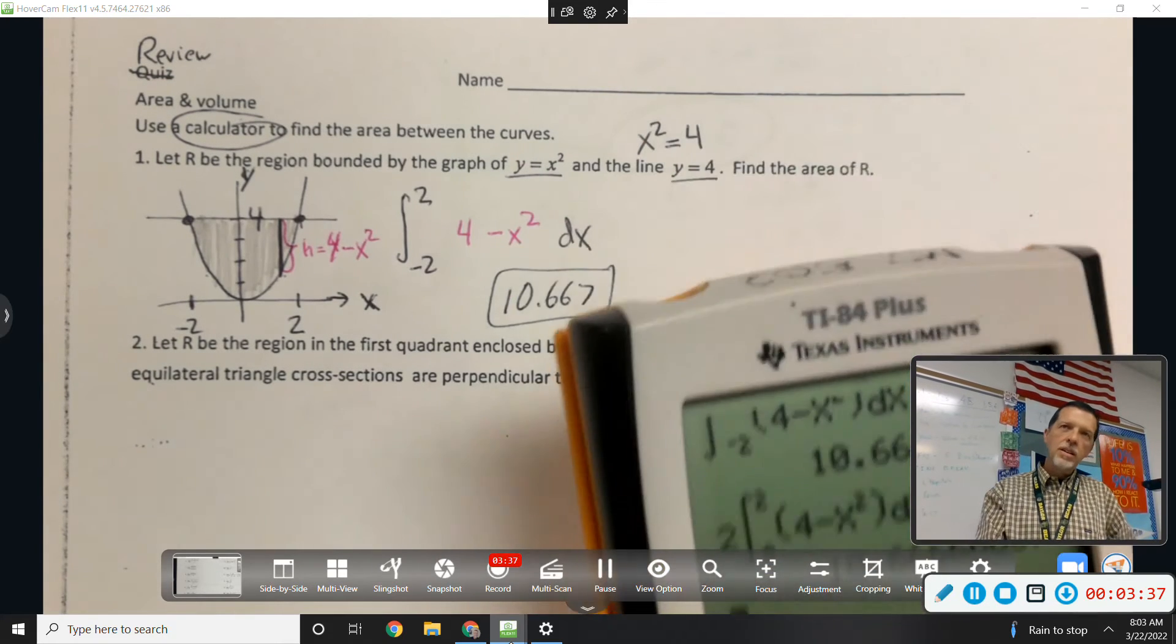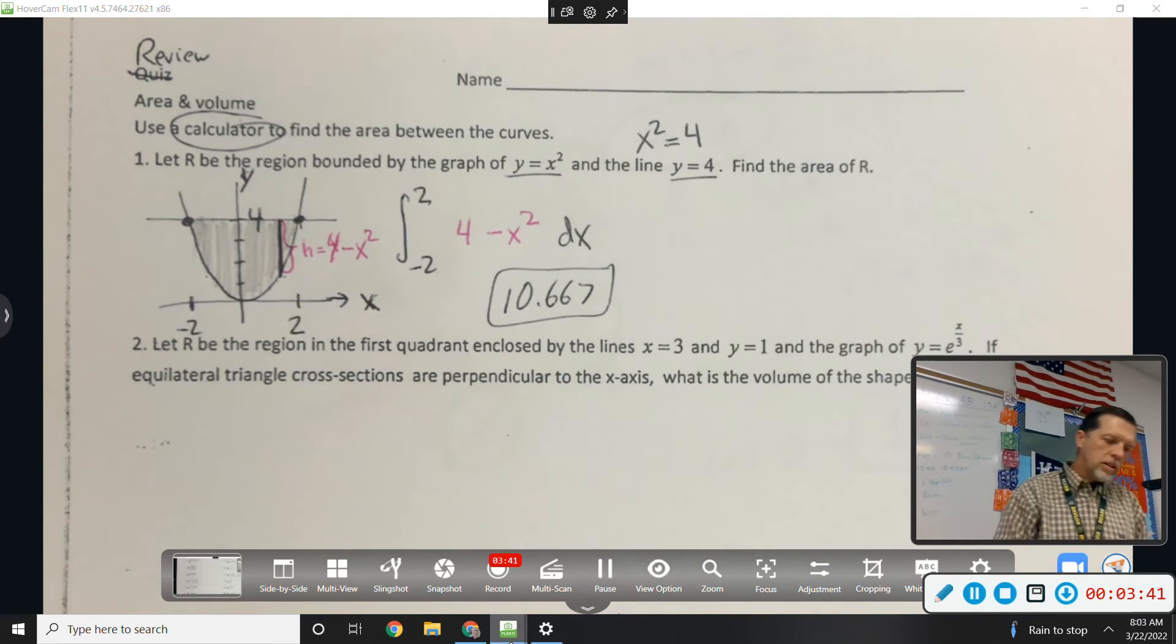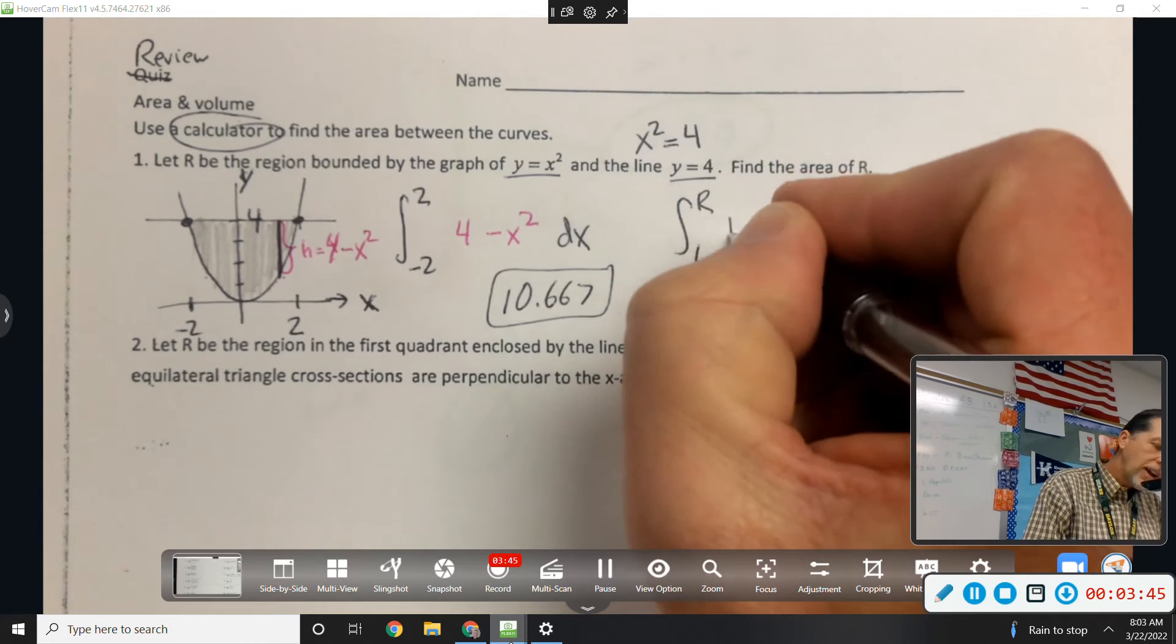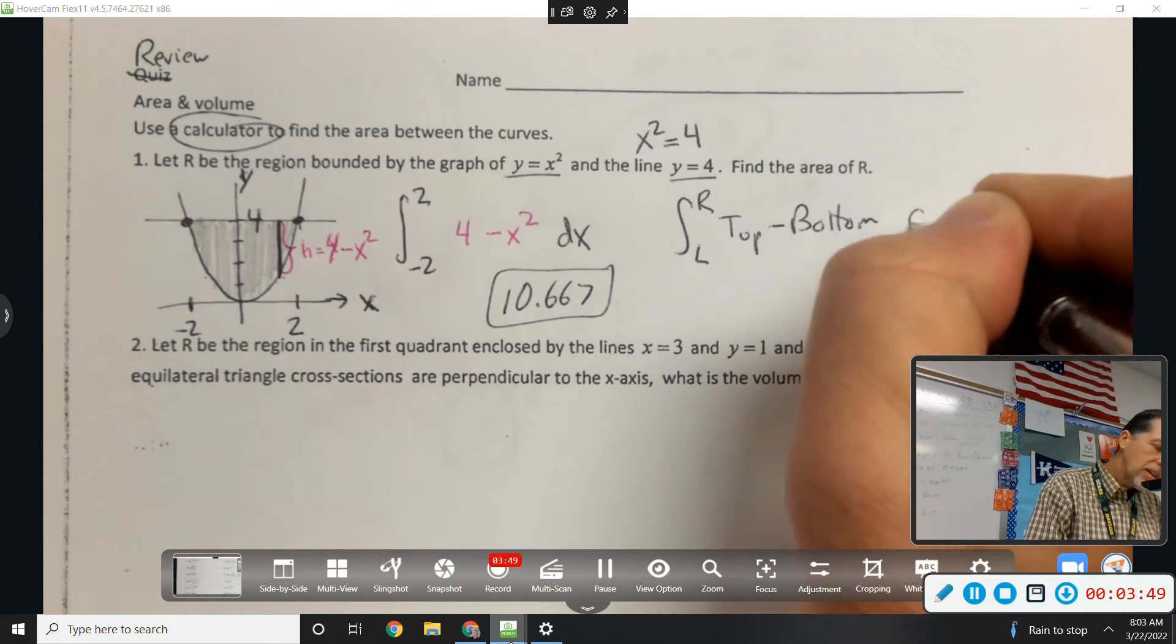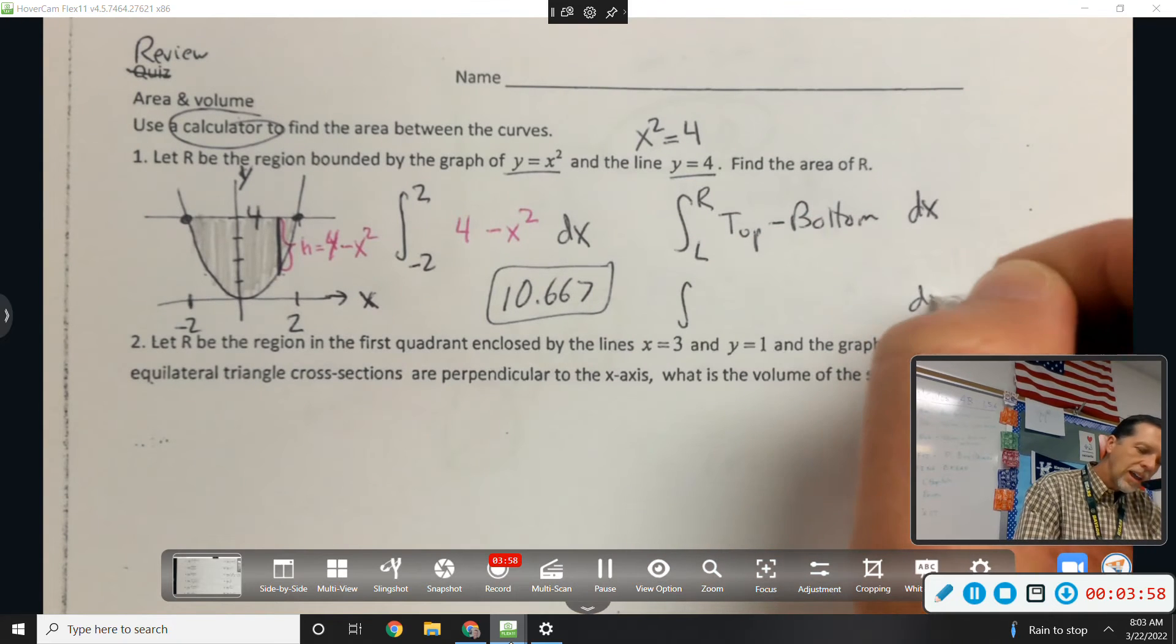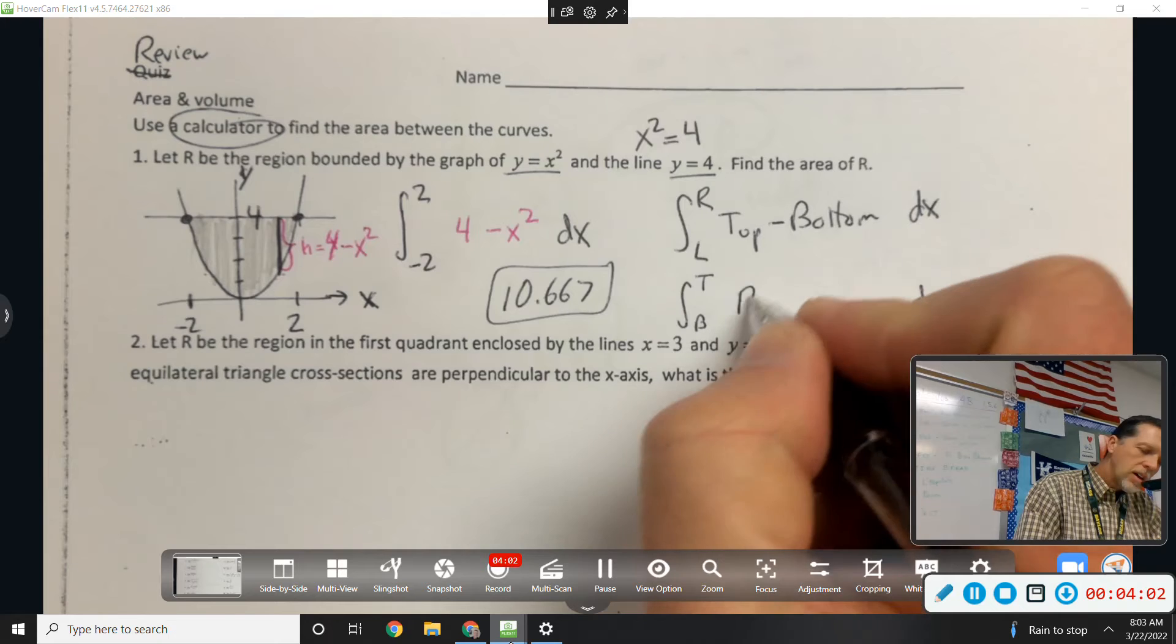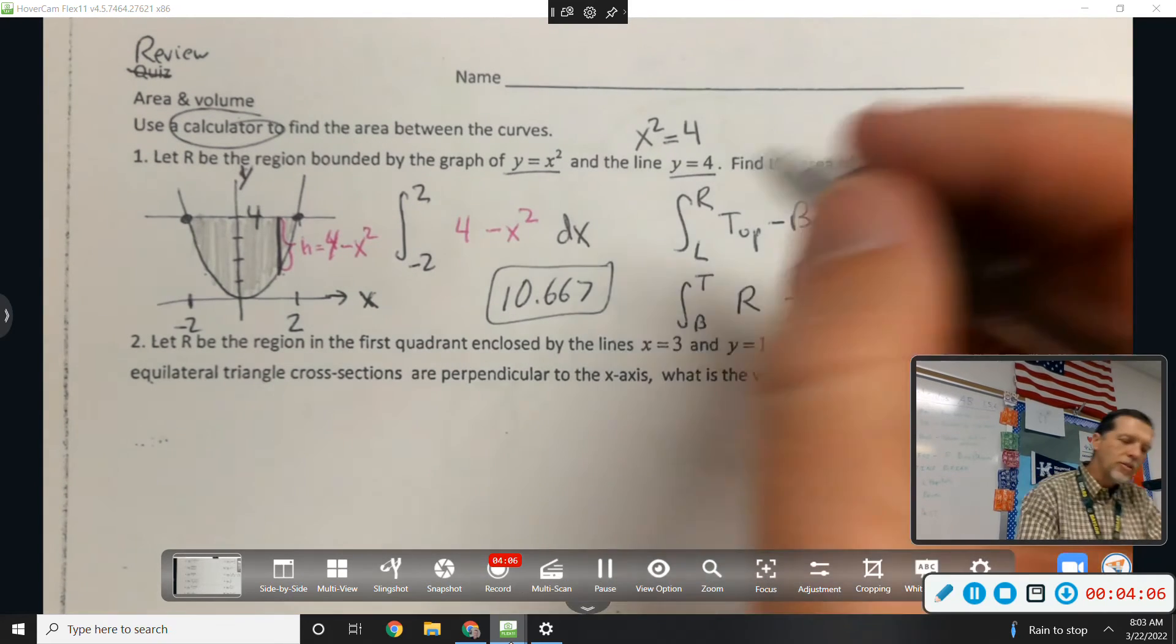How did you come up with the four minus x squared? Because it was the integral from left to right of top minus bottom dx. The top curve minus the bottom curve. The tricky ones are the ones that are dy. But that would be from bottom to top of right minus left. So there's your two area formulas.